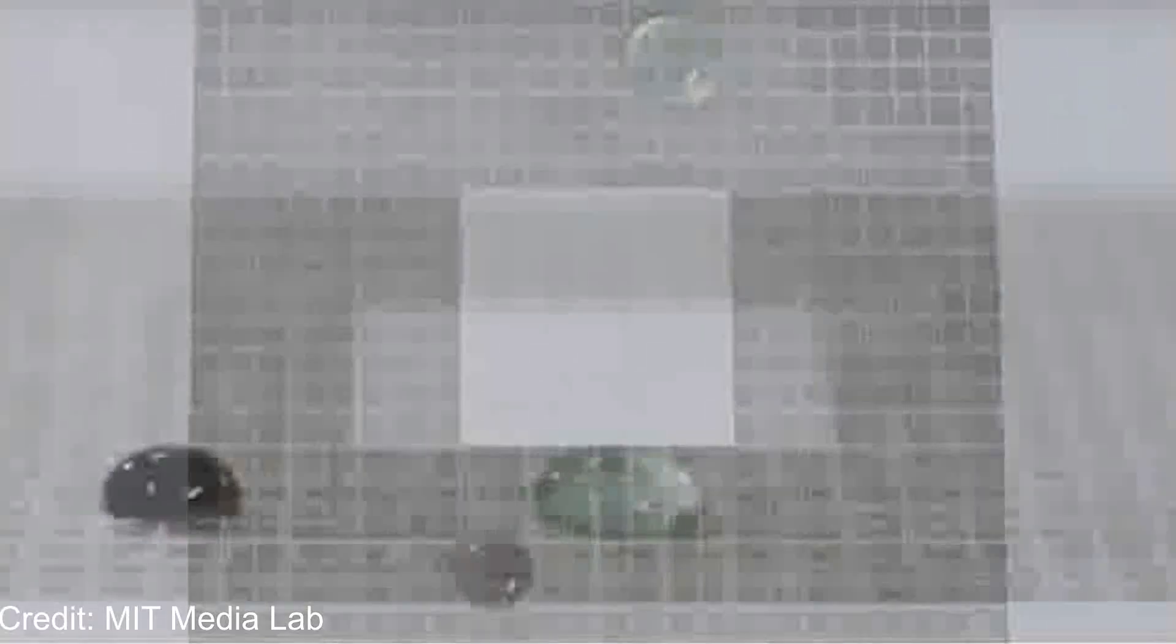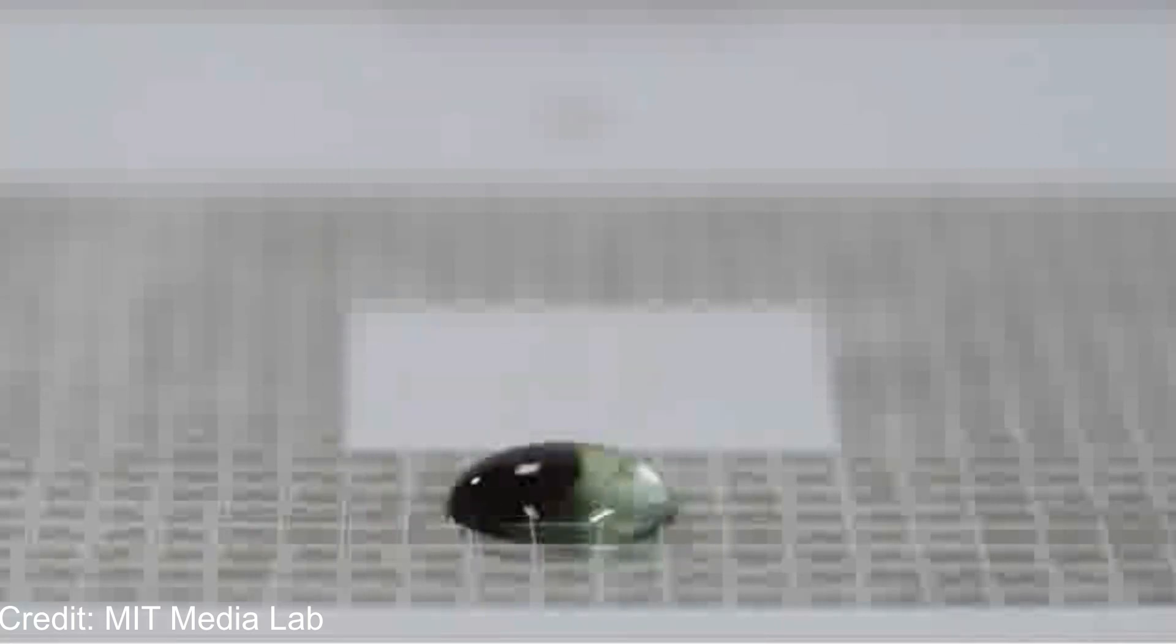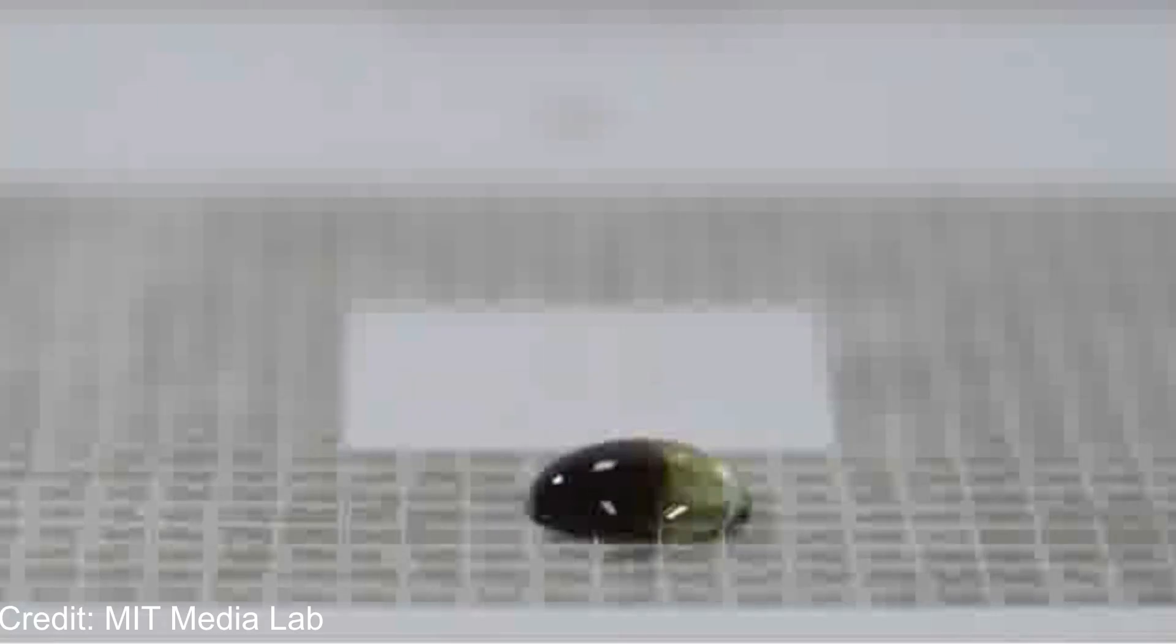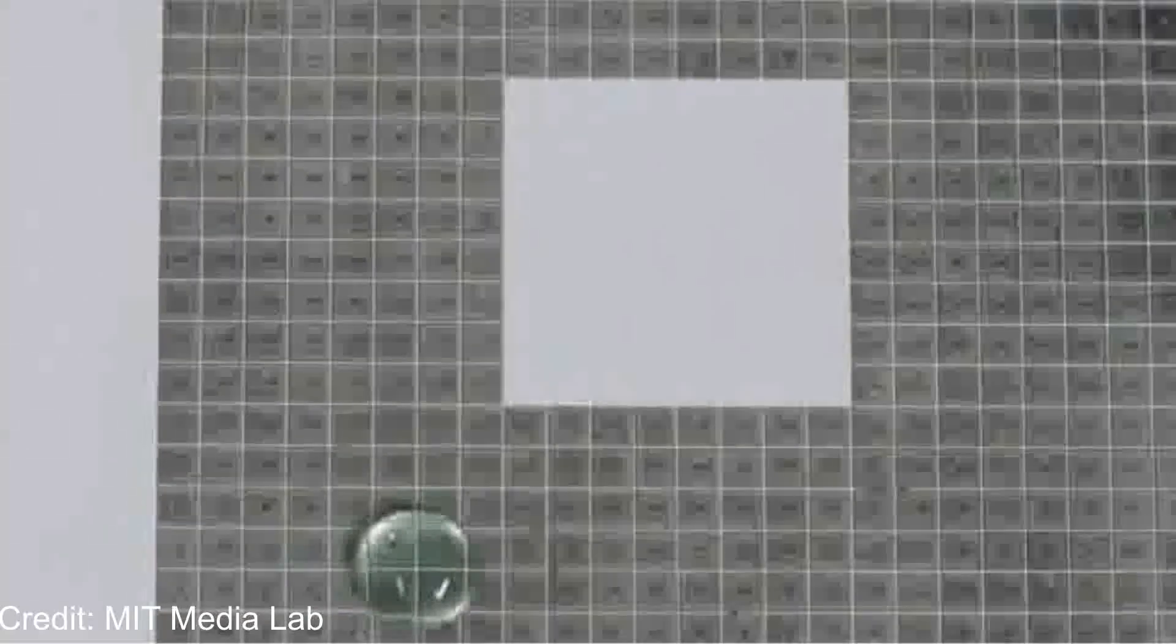But moving droplets clearly isn't just about magnets. Water droplets naturally want to stick to surfaces because of surface tension and adhesion forces, a classic problem in fluid mechanics. To counter this, MIT researchers used a superhydrophobic surface engineered at the microscopic level to reduce friction, repel water, and minimize what's called contact angle hysteresis.